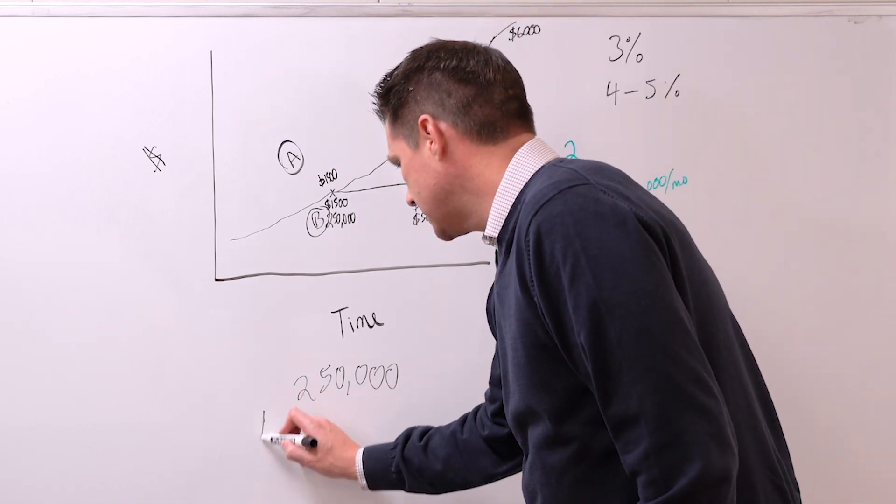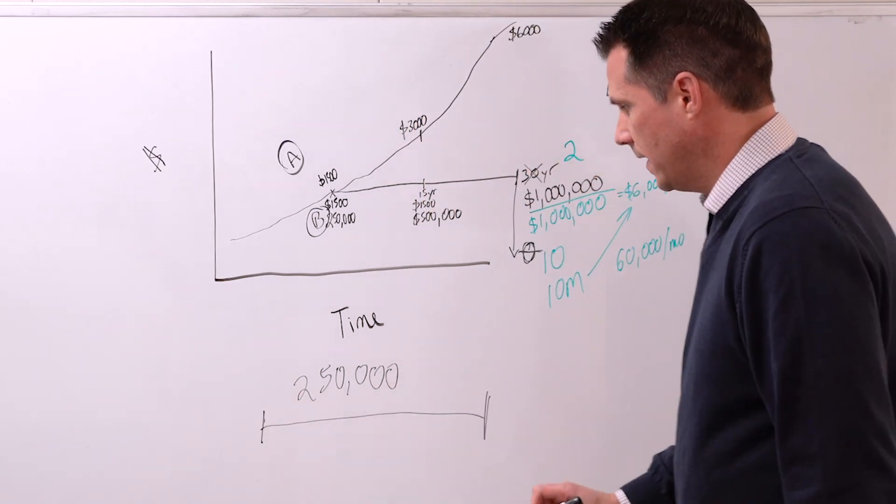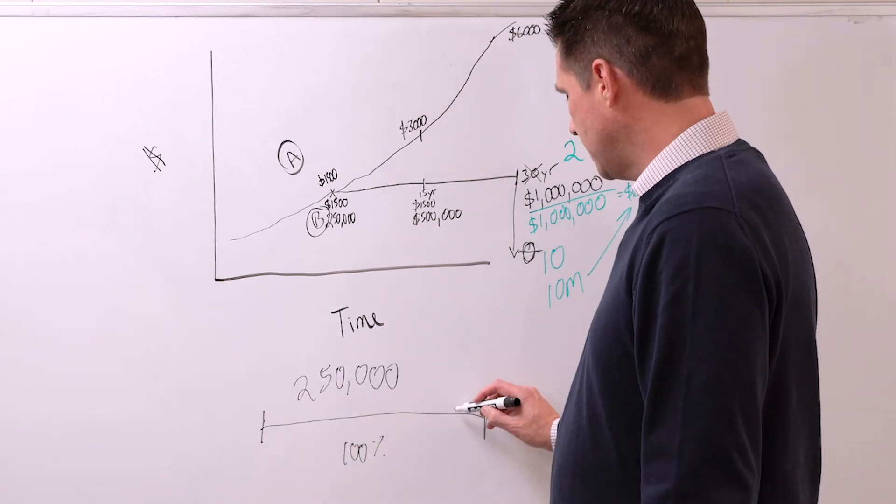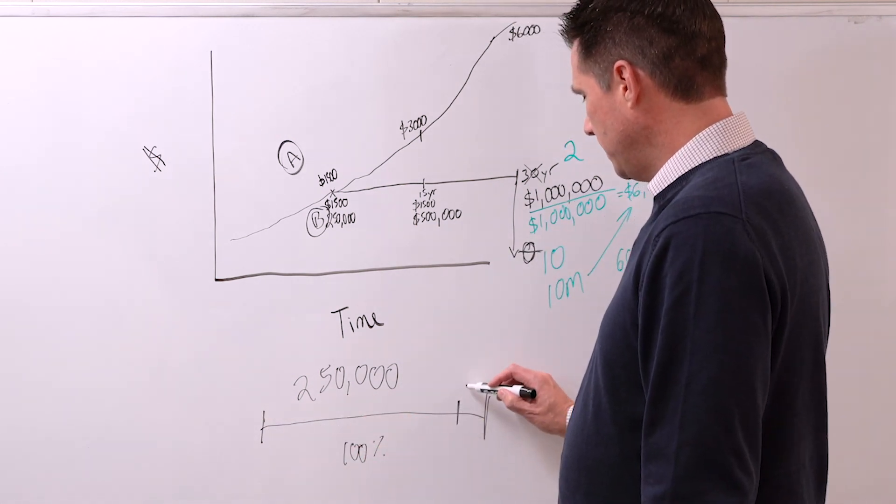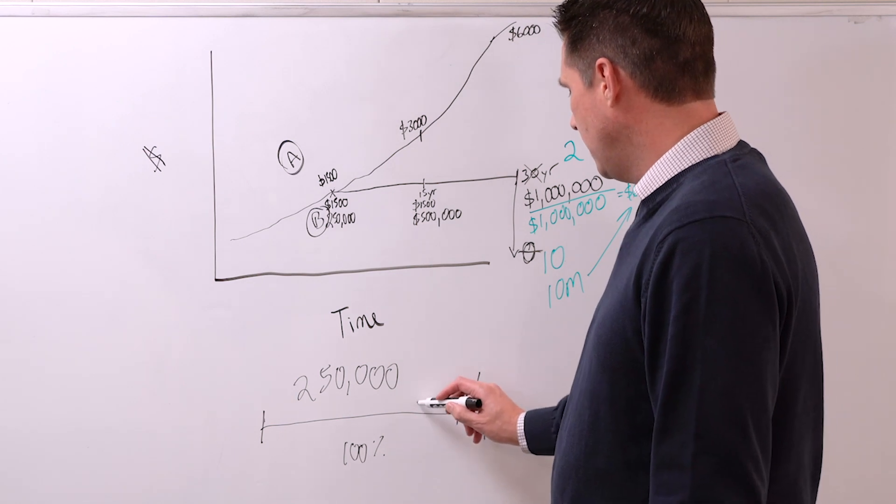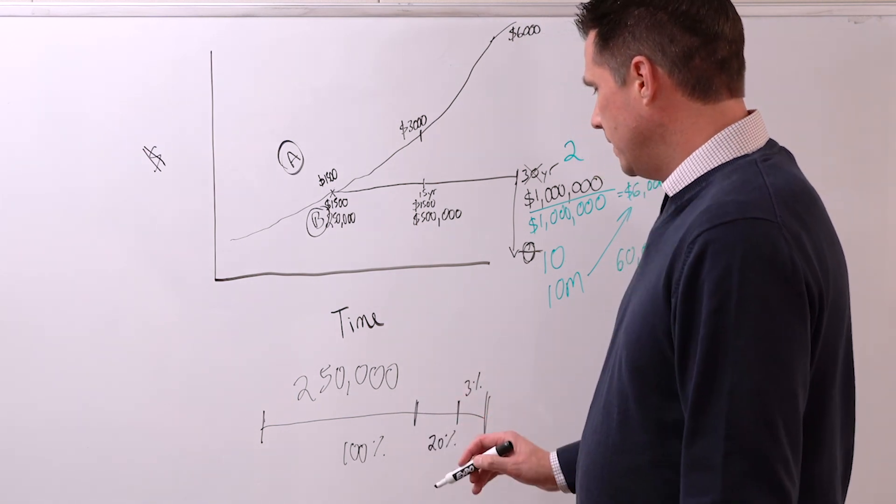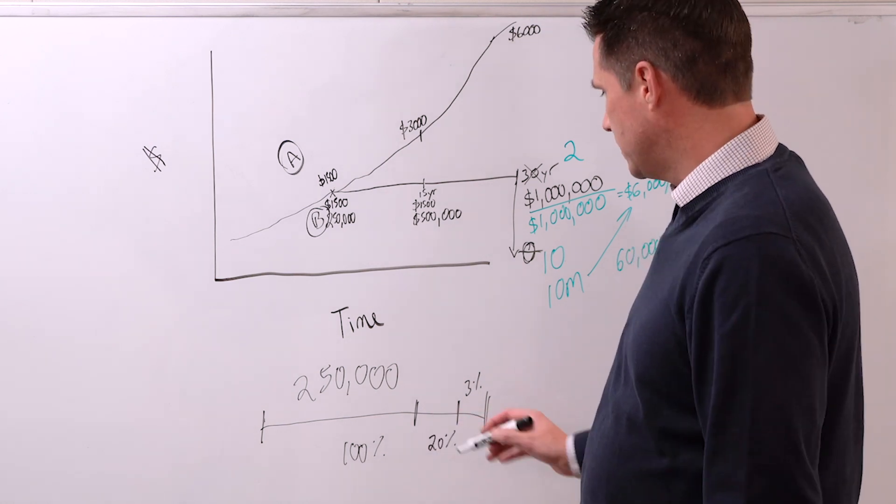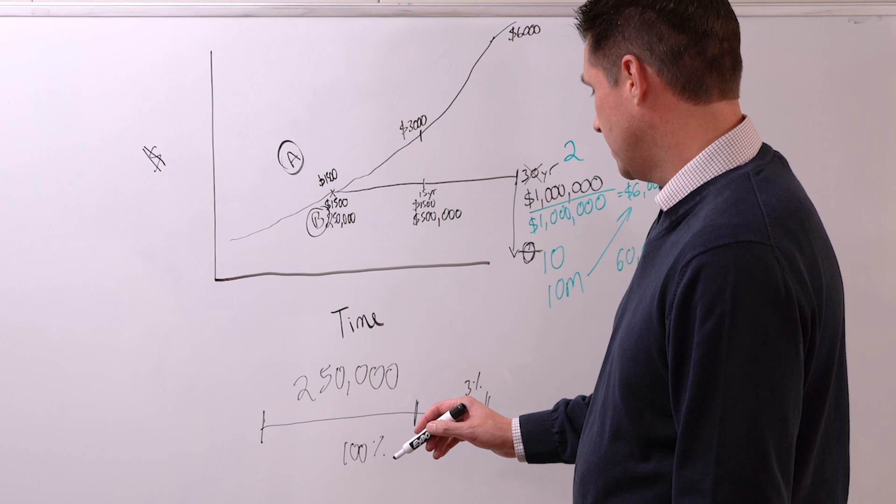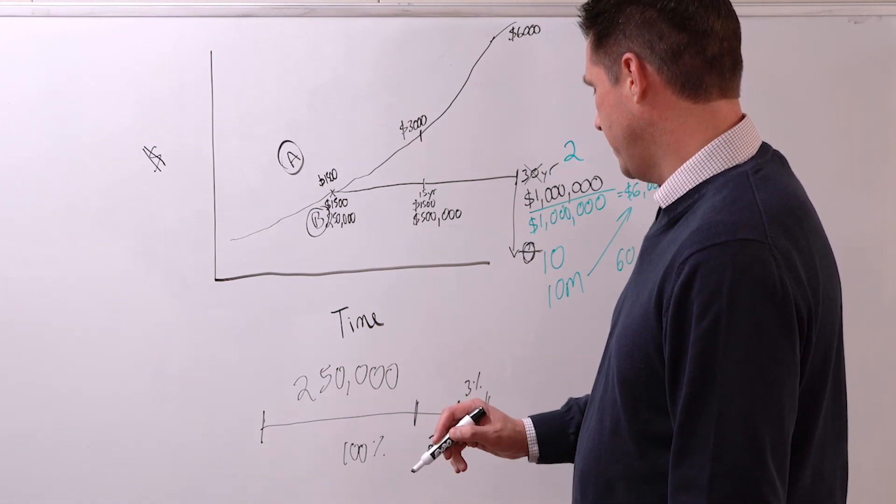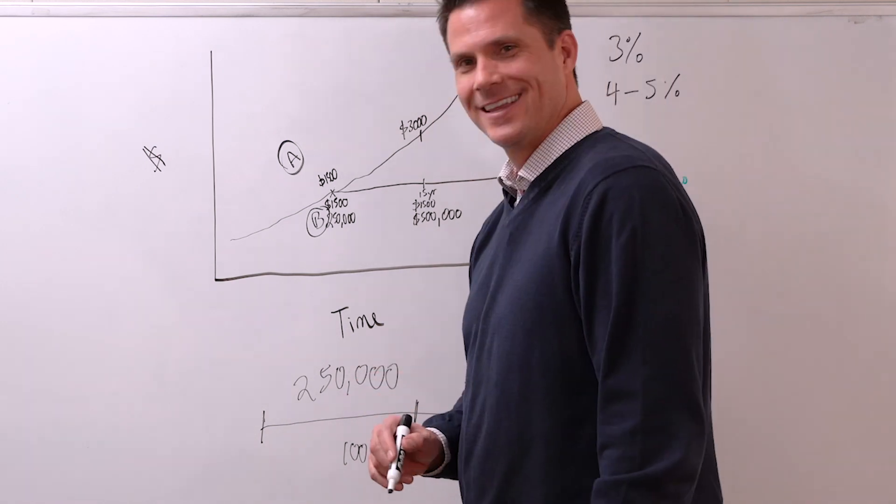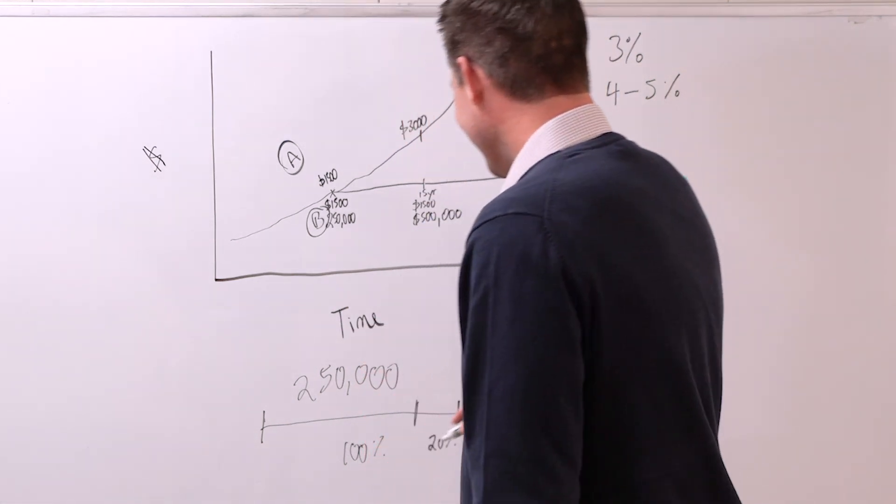But in real estate we have something called the power of leverage. Let this line represent the value of the house—this is 100% of the house. The fact is that when most people buy, if it's for themselves, they're probably putting 3% or so down on the house on many owner-occupied, and for investments it could be 20%. Either way, you've leveraged the house. In this scenario, let's see what's 20%—that's $50,000. You're going to put 20% down, and this is $50,000.